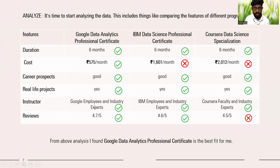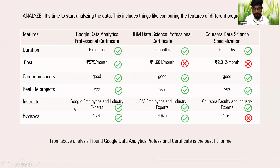We found that all three have similar durations of about six months, similar career prospects, real-life projects, and industry experts as instructors. The key difference is in cost and reviews. The Google Data Analytics Professional Certificate is more affordable compared to IBM and Coursera.